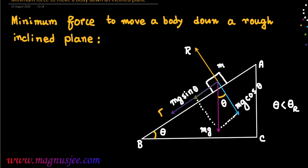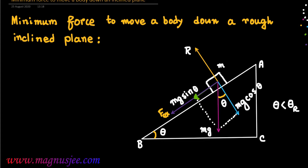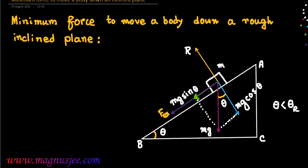An external force FEX is applied on the body down the inclined plane, parallel to the inclined plane, to move the body down. Limiting friction FL acts on the surface in contact between the body and the rough inclined plane, acting up the inclined plane.